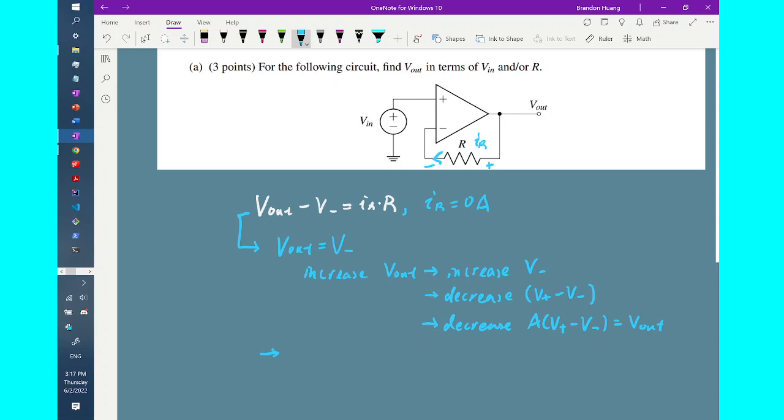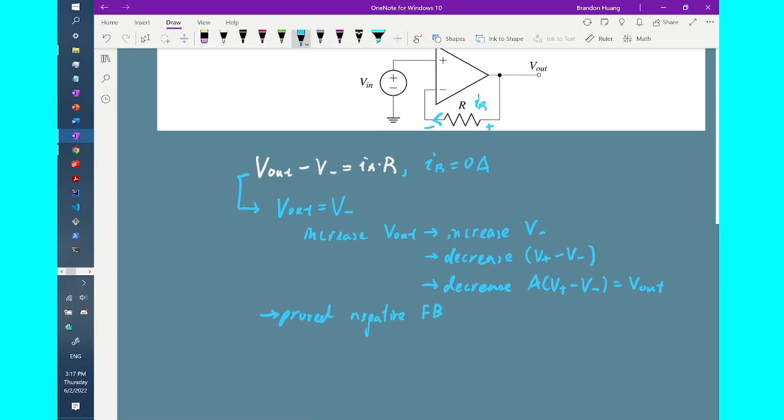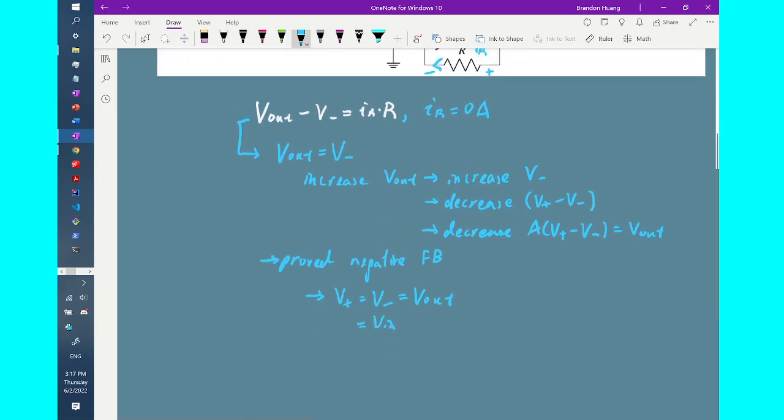And since we have proved negative feedback, which I'm going to abbreviate as negative FB, I have acquired the knowledge from the golden rule that V_+ is equal to V_- in this op-amp, which is equal to V_out, because V_- is equal to V_out, but V_+ at the same time is also equal to V_in. So in other words, I find that the answer is V_out is equal to V_in in this question.